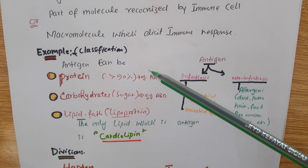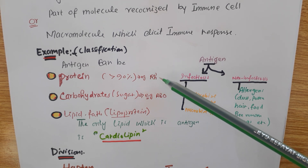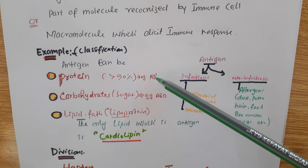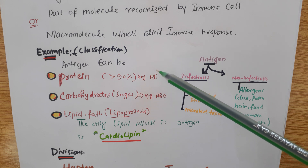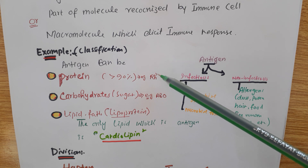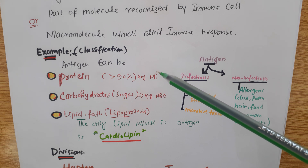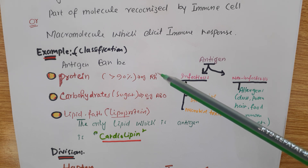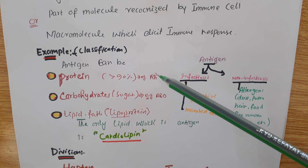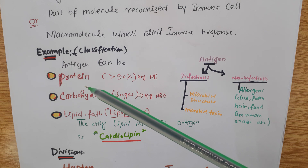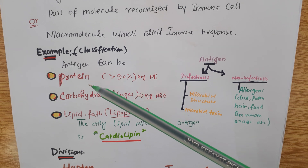For example, Rh, Rhesus, which is present on blood groups — it makes the blood group positive. If Rh is present, the blood group will be positive. If Rh is not present, the blood group will be negative. There are two types of antigen: T-dependent antigen and T-independent antigen. I will make another video on that. But here, you have to understand that the majority of antigens — more than 90% — are protein.